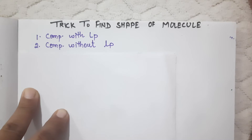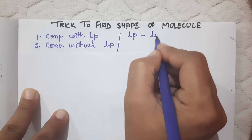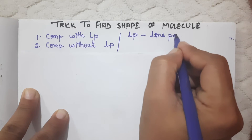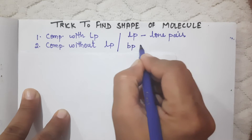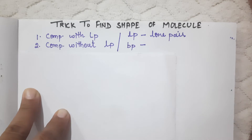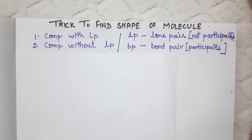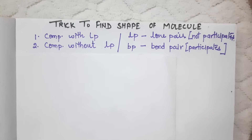A lone pair means the pair of electrons which do not participate in bond formation. A bond pair is the pair of electrons which participates in bond formation. So a lone pair does not participate, and a bond pair of electrons does participate.